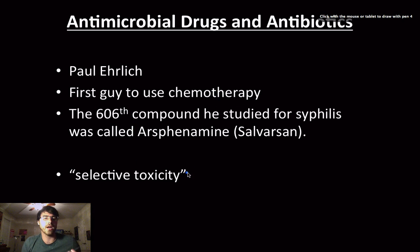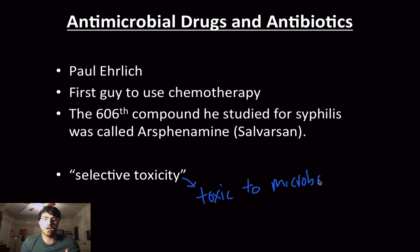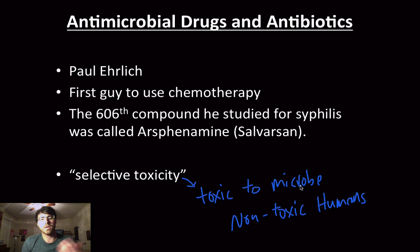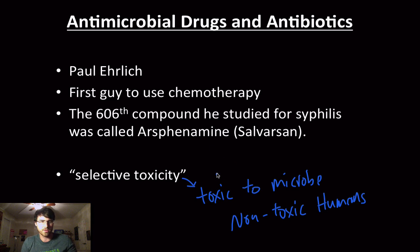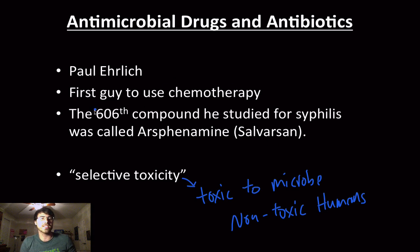He coined the term selective toxicity, which is basically how much something can be toxic to a microbe causing disease, and how well something can be non-toxic to the humans or host. Sometimes it can be very toxic but last just long enough to kill whatever's inside of you, and then your body recuperates. He used a large number of trials trying to treat syphilis with a compound called arsphenamine, or salvarsan. He tested 606 compounds before he finally got something successful.